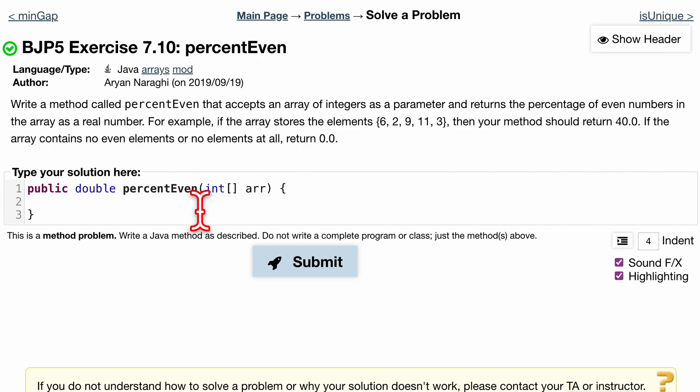Make sure you read the instructions and attempt it on your own. Let's go over the answer now. We want to write our method percentEven that accepts an array of integers as a parameter and returns the percentage of even numbers in the array as a real number, so we're going to use a double here. Make sure you read over the example. For a percentage...